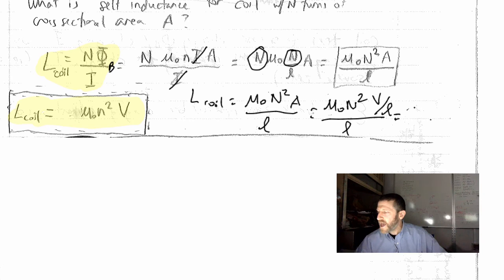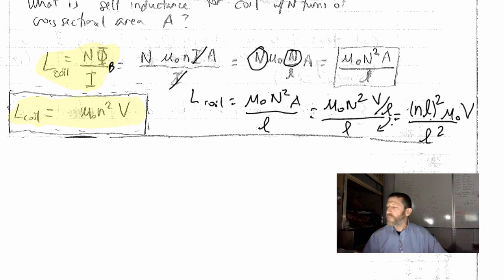and then for n squared, notice that is (N/l) quantity squared, and that is all over, this is μ₀ times V over l squared, just putting this l on the bottom there. And notice that this l squared cancels that l squared, and what I'm left with is exactly this.